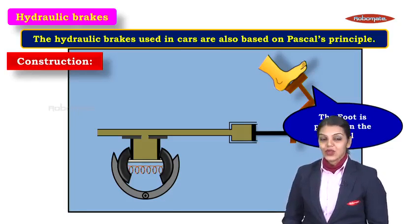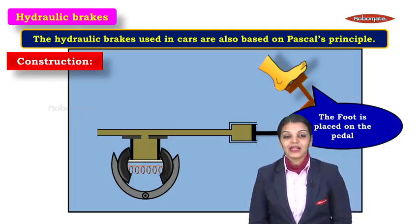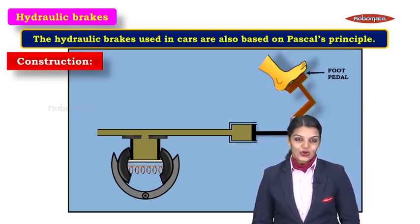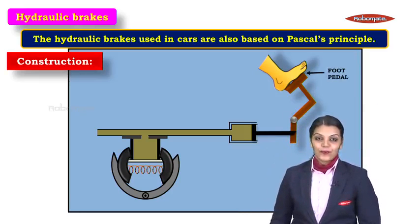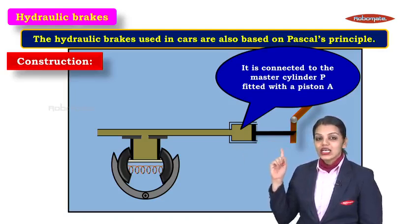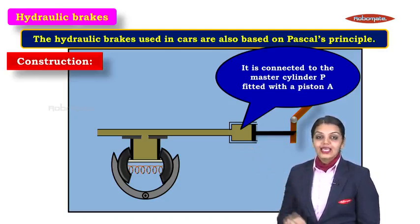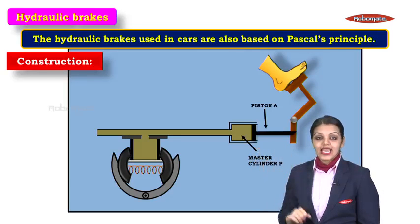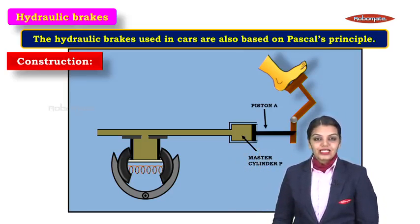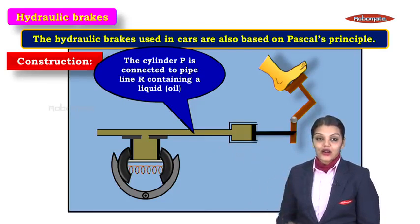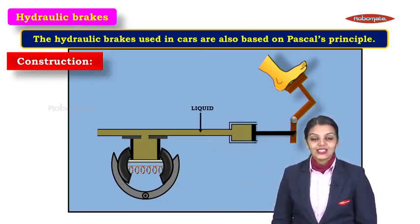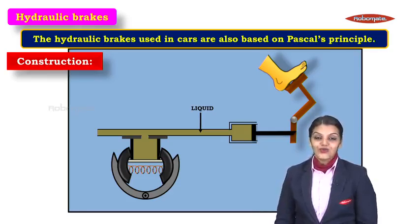Now if you take a look at the diagram, the first thing we do in a hydraulic brake is place our foot on the pedal. The foot pedal is the first component. The foot pedal is connected to the master cylinder P. If you take a look at this black piston, it's piston A. So the foot pedal is connected through piston A to the master cylinder P. Every vehicle has a master cylinder P. To this master cylinder P is connected a pipeline R, which contains a liquid — in the case of a hydraulic brake, this liquid is oil, commonly referred to as brake oil.